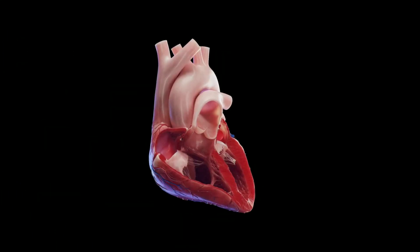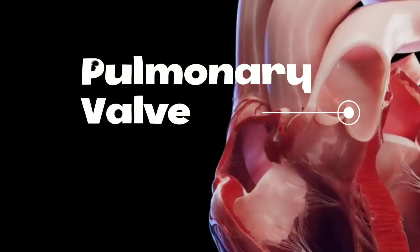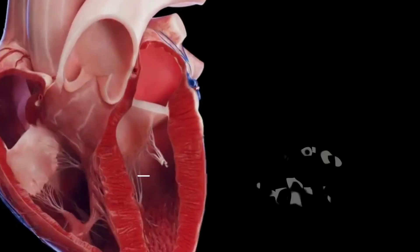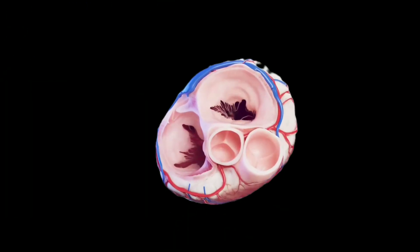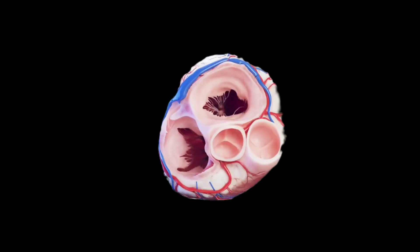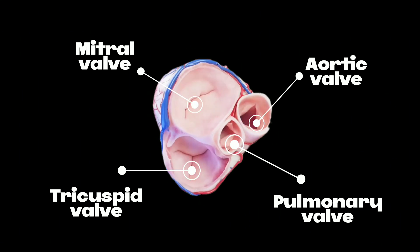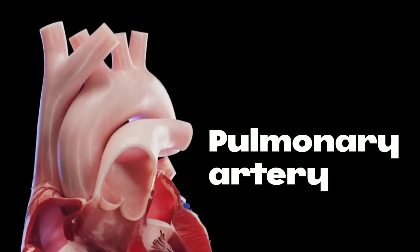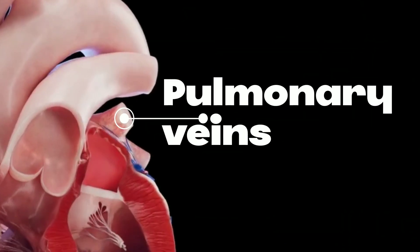And we also have four valves: tricuspid valve, pulmonary valve, mitral valve, and aortic valve. And they look like this from above. We also have vena cava, pulmonary artery, aorta, and pulmonary veins.